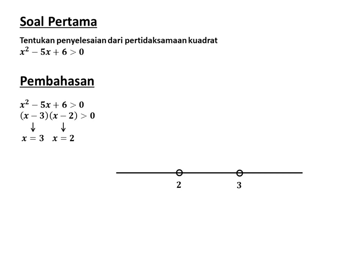Gunakan titik uji untuk menentukan daerah yang positif atau negatif. Saya menggunakan titik uji x = 0, yang berada di sebelah kiri 2. Substitusikan 0 ke x² - 5x + 6: hasilnya 0² - 5(0) + 6 = 6, bernilai positif. Daerah di sebelah kiri 2 bernilai positif. Karena akarnya 2 akar yang berbeda, tandanya selang-seling: kiri 2 positif, tengah negatif, kanan 3 positif.